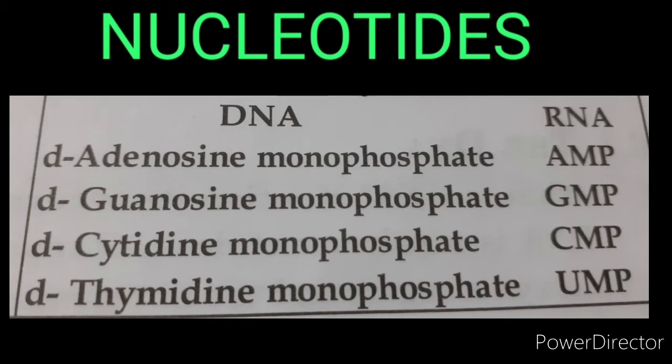Deoxythymidine combined with phosphoric acid forms deoxythymidine monophosphate, also called thymidylic acid. Deoxycytidine combined with phosphoric acid forms deoxycytidine monophosphate. So the nucleotides present in DNA are: deoxyadenosine monophosphate, deoxyguanosine monophosphate, deoxythymidine monophosphate, and deoxycytidine monophosphate.